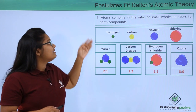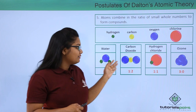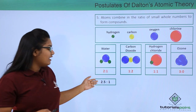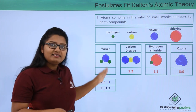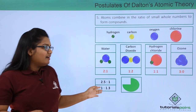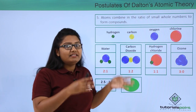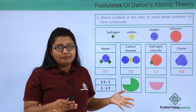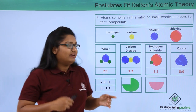This postulate essentially says that we cannot have a ratio like two-point-five to one or one to one-point-three, because that would mean three-fourths of an atom or half of an atom is taking part in a reaction, which does not make sense.